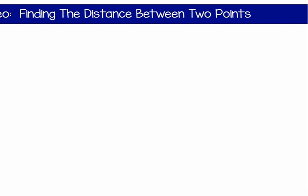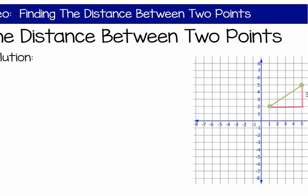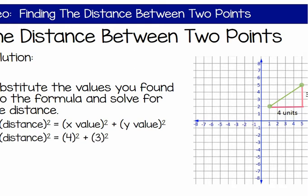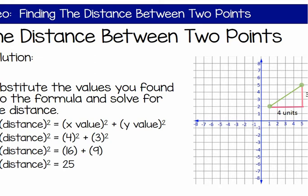Now, you want to use the values we found, three units and four units, to substitute into the formula. Distance squared is equal to x value squared plus y value squared, which would give us four squared for the x value squared and three squared for the y value squared, which is equal to sixteen plus nine, which is twenty-five.